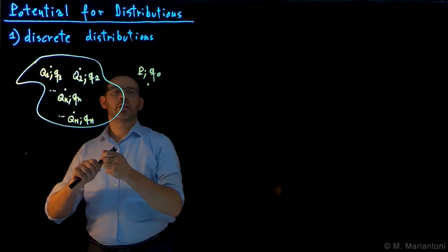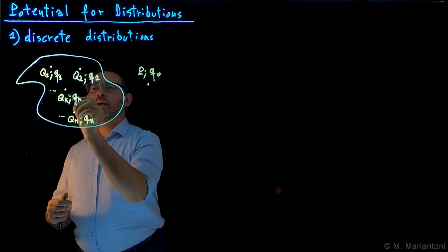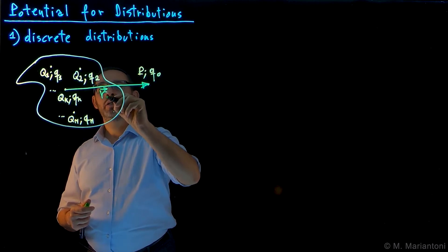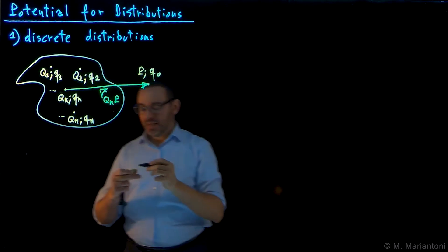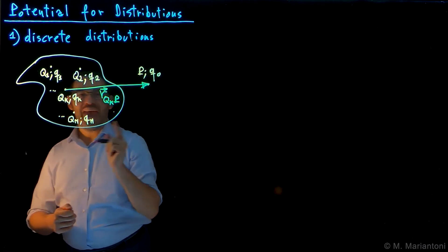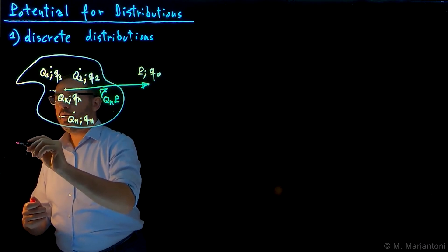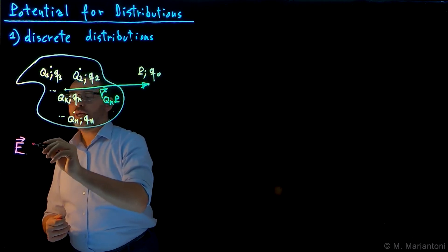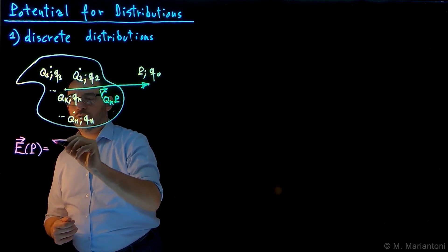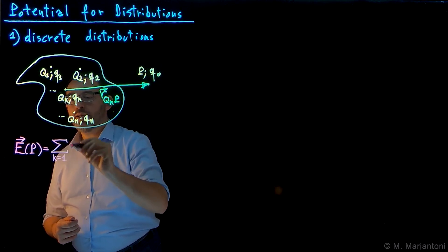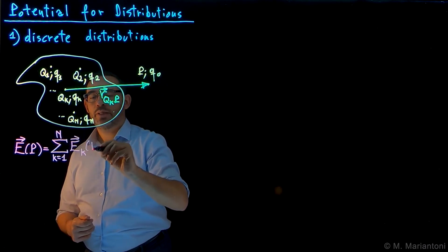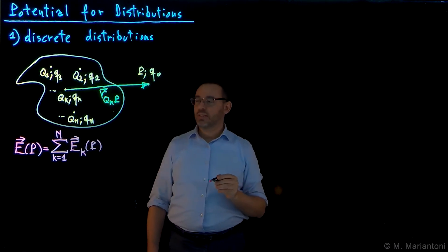The vector distance between Qk and P is what we call the vector r_QkP. We know that the electrostatic field E, from Coulomb's law and the superposition principle, at observation point P is given by the linear superposition — the sum from k=1 to N of the vector field Ek at point P. So we are summing up all these fields.